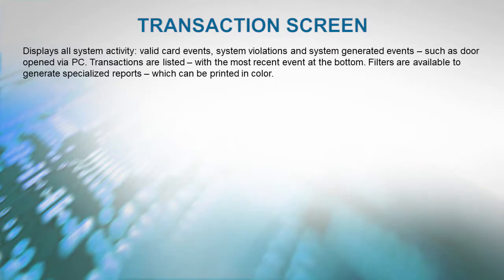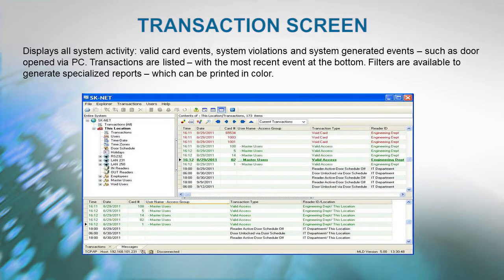The transaction screen displays all system activity: card events that are valid, system violations such as void cards, and system-generated events such as door opened via PC. Transactions are displayed in a list, with the most recent event displayed at the bottom of the screen. There are many different filters available to generate specialized reports which can be printed in color.